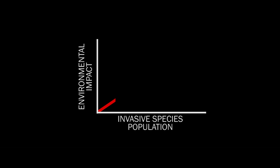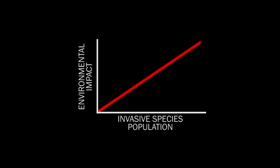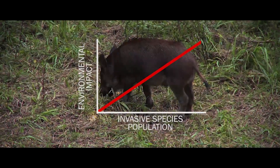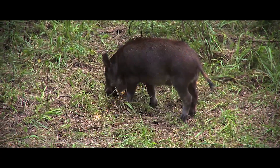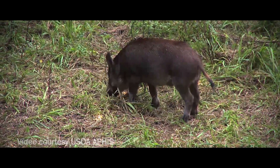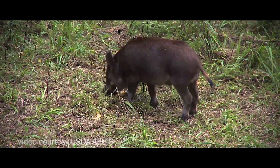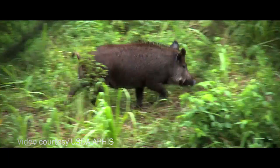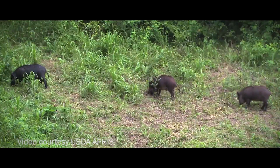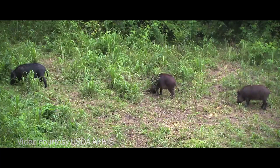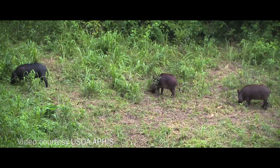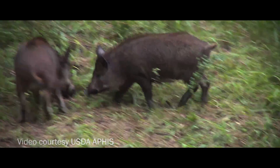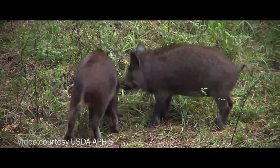Generally speaking, the greater the invasive species population, the greater the impact it will have. A good example is the feral swine, an invasive species that can cause considerable damage to forests, croplands, and water resources. They can also host diseases that threaten humans, wildlife, and livestock. While one hog can certainly cause damage, a group of swine can cause extensive damage.